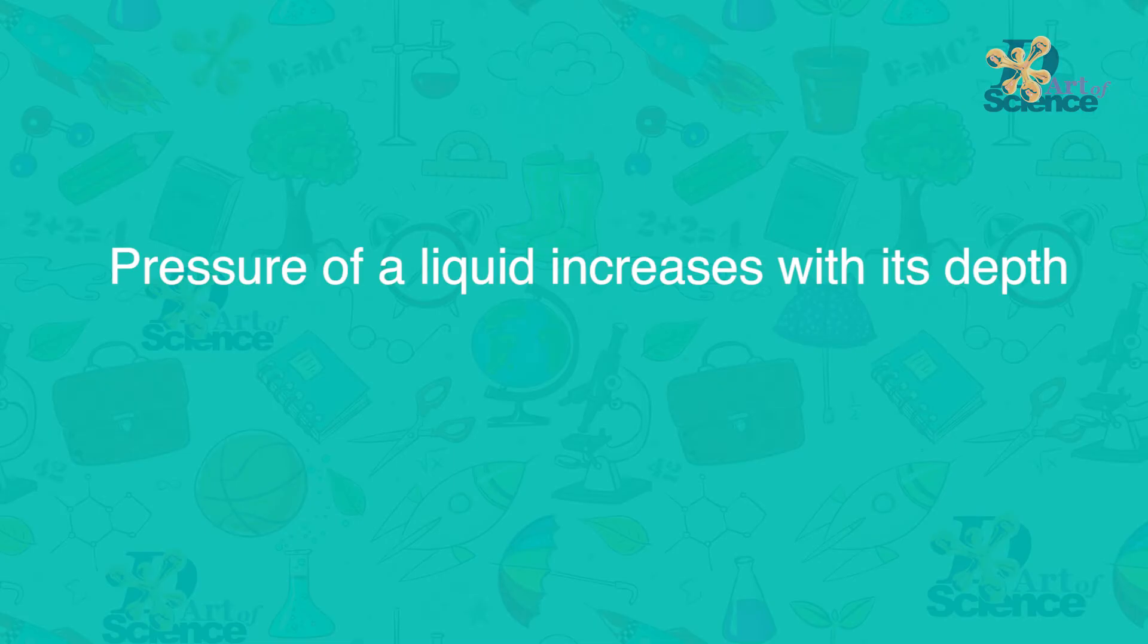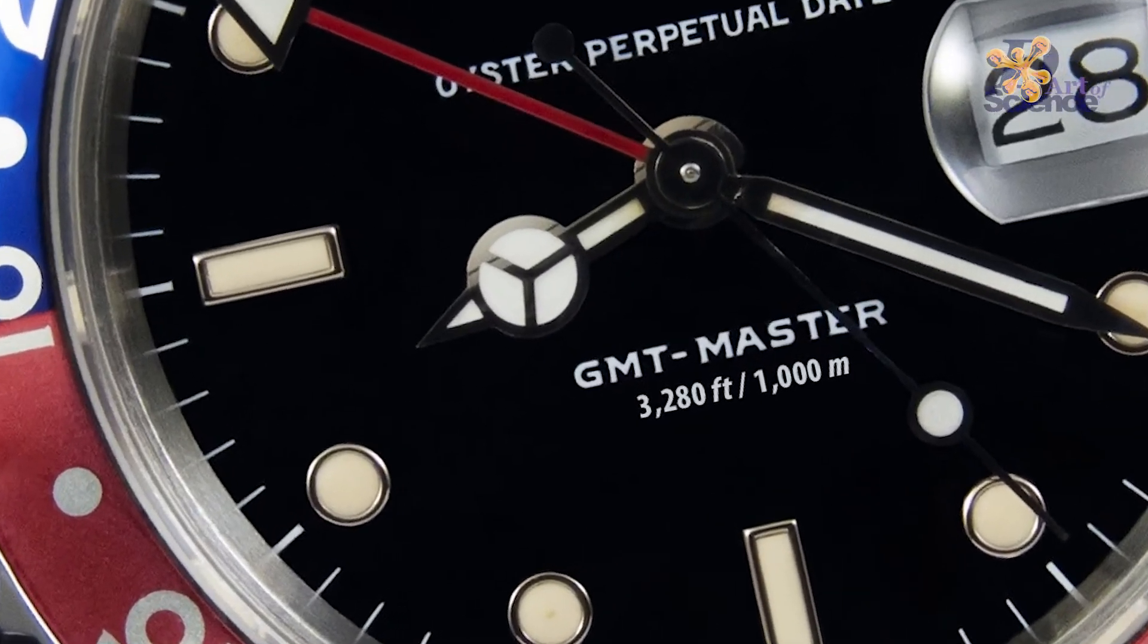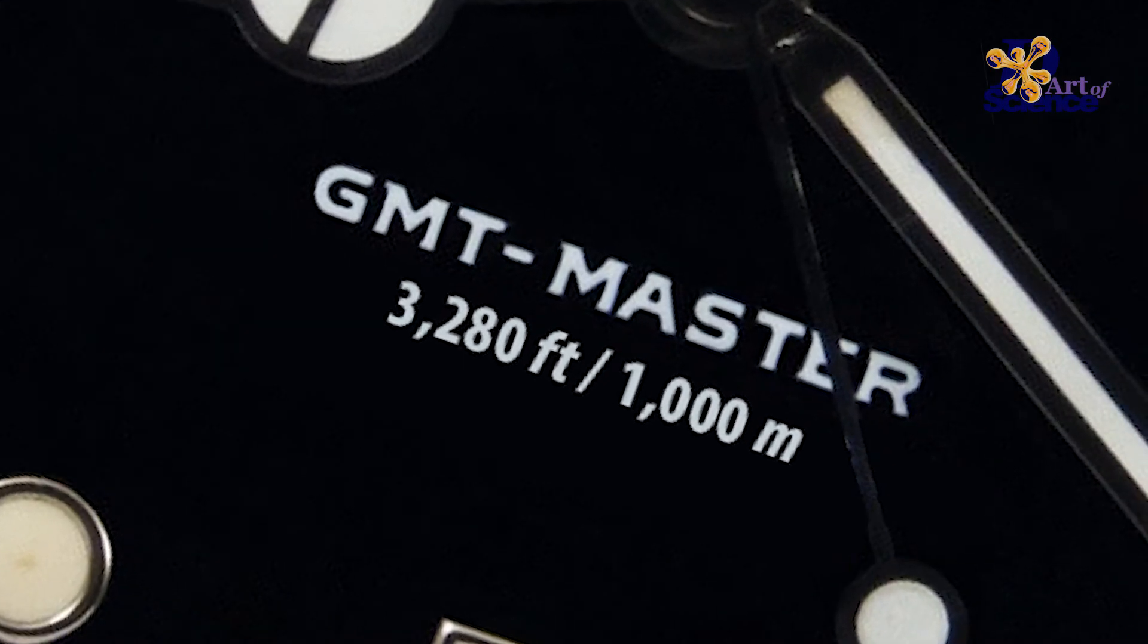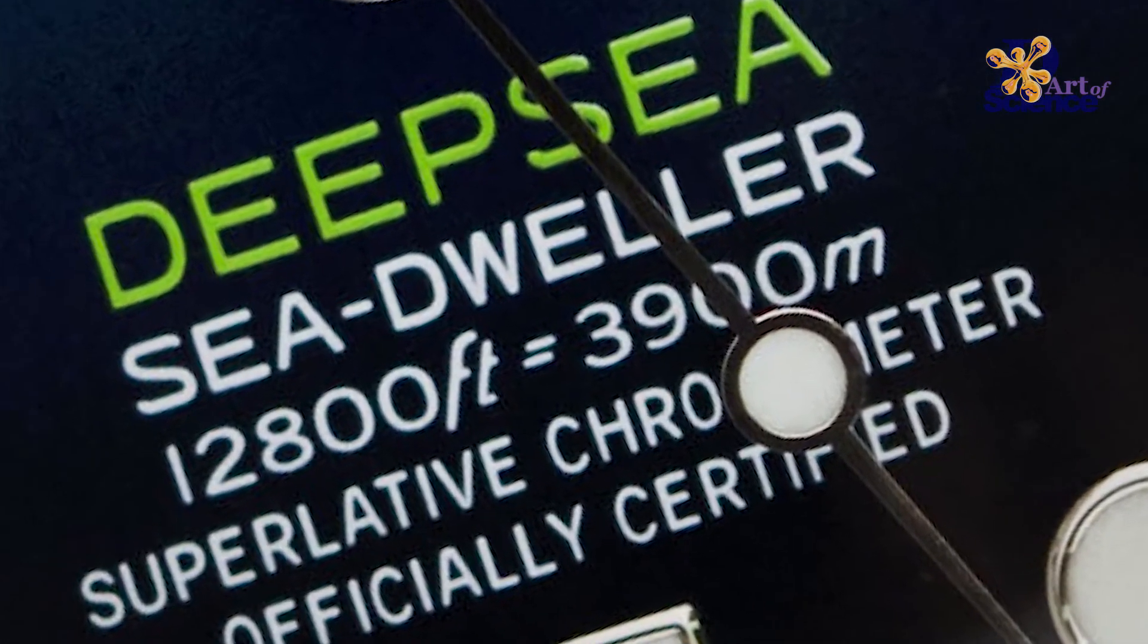So now we know that the pressure of a liquid increases with its depth. And that's why you will also come across sports watches that say 10m, 50m, 100m which means that it can withstand the pressure up to that depth. But not more. Beyond that the water may enter the watch.